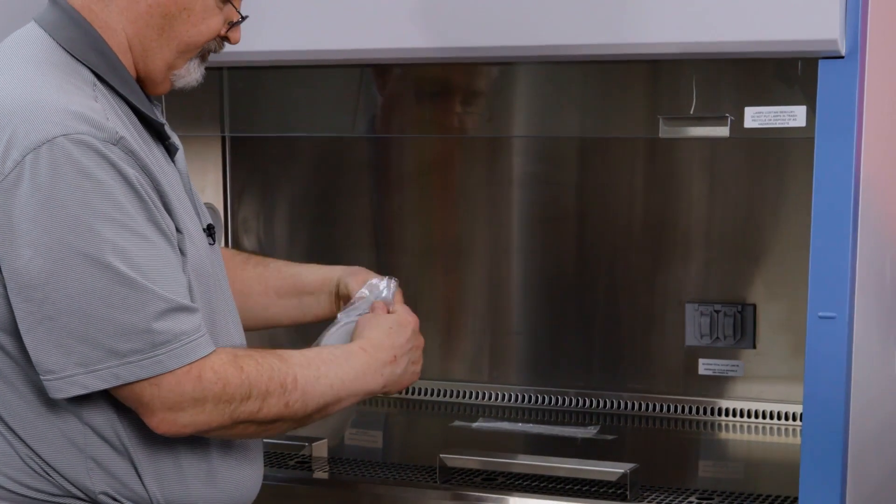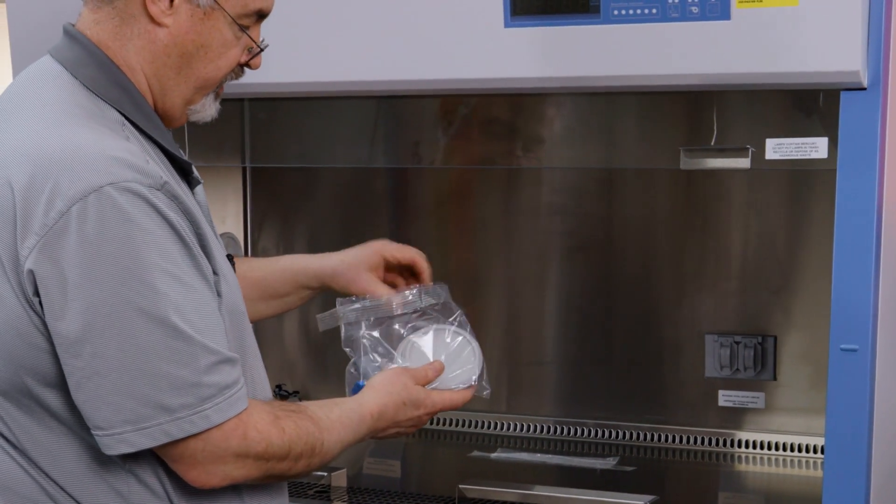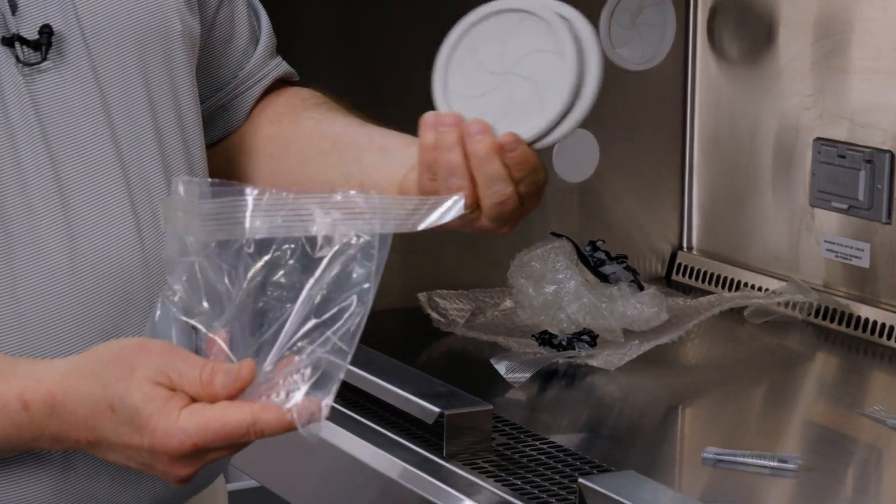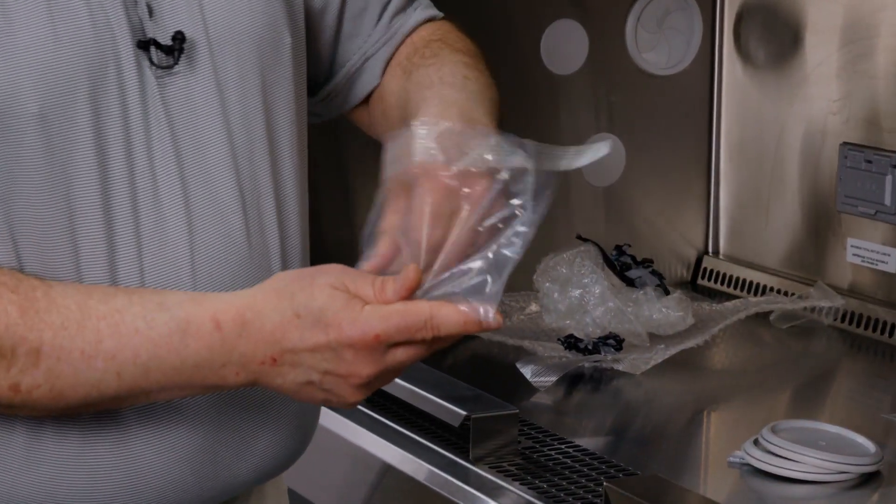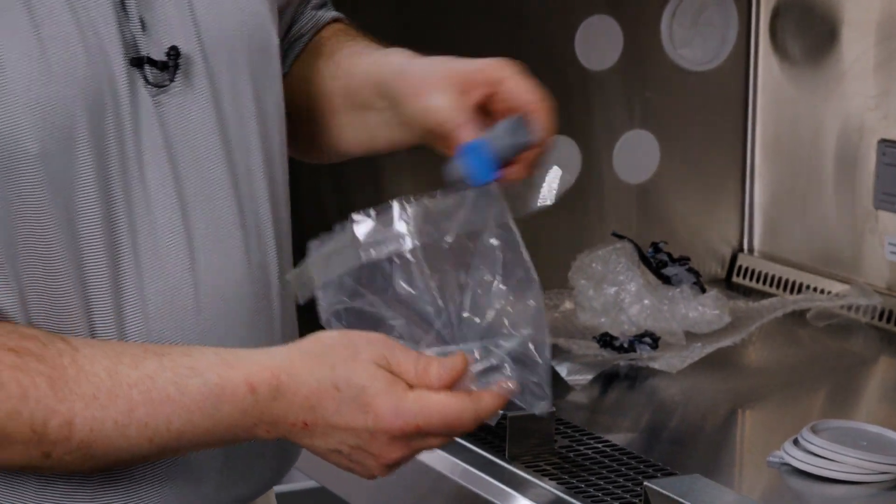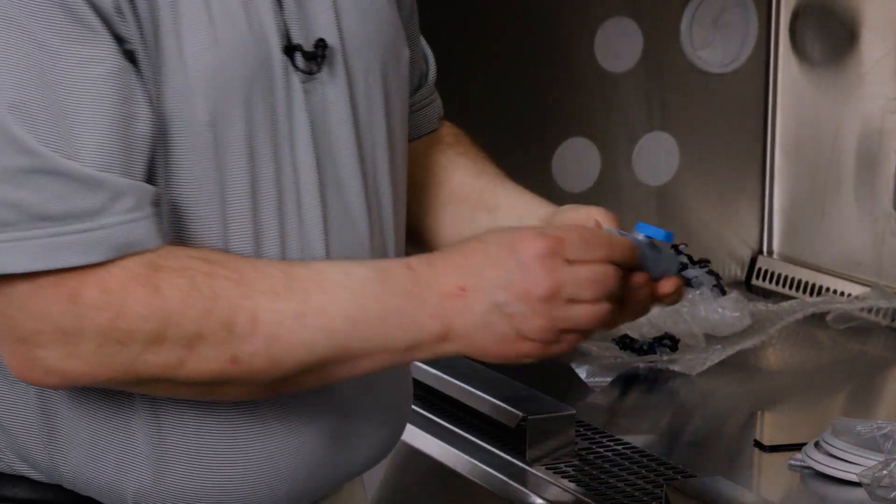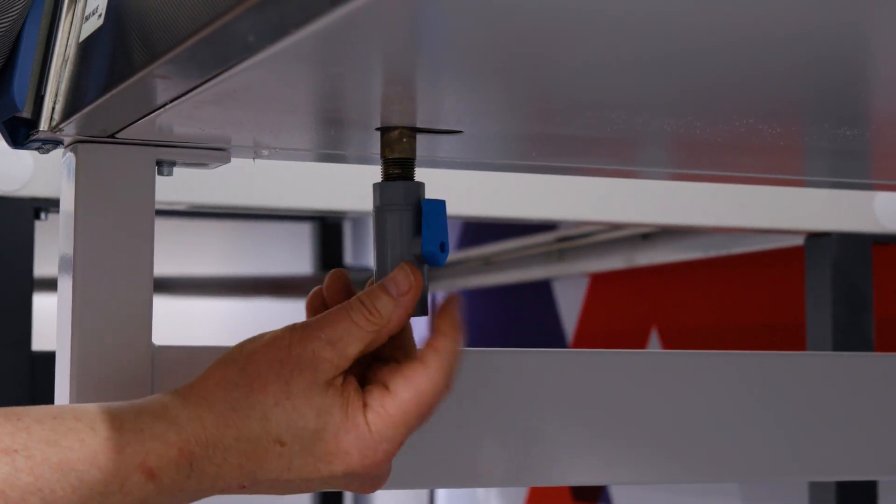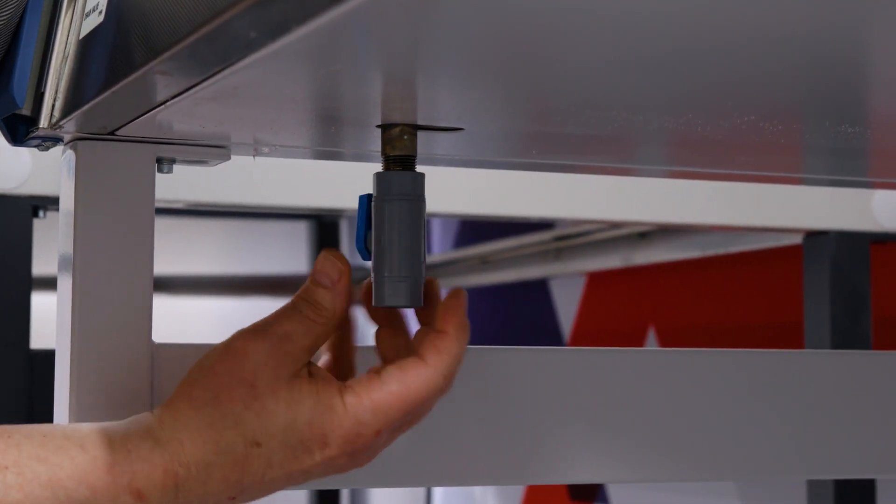In the front work surface you'll find this little package. It contains an extra allen wrench, some spare grommets for your smart port, and the drain valve. And we just thread it onto the exposed pipe, the drain pipe, on the underneath of the cabinet.